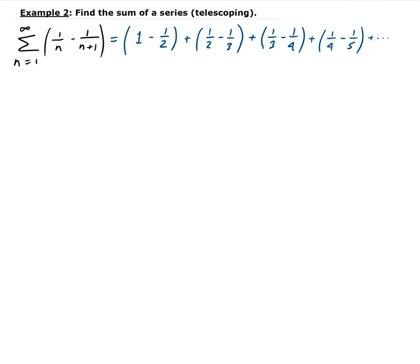Let's simplify this. Remember, this was for n equals 1, this for n equals 2, n equals 3, and n equals 4. This gives us 1 minus 1/2, plus 1/2, minus 1/3, plus 1/3, minus 1/4, plus 1/4, minus 1/5.